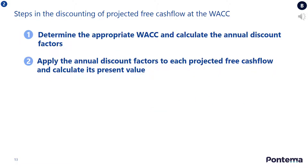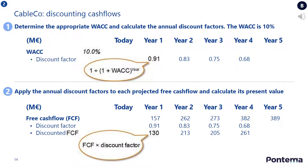The second step in performing a discounted cash flow valuation is to discount the projected free cash flows at the weighted average cost of capital. This step has two key tasks, as shown in the slide: firstly, to determine the appropriate weighted average cost of capital and calculate the annual discount factors; and secondly, to apply the annual discount factors to each projected free cash flow and calculate its present value. The weighted average cost of capital was given as 10%, which allows you to calculate the appropriate annual discount factor. Applying these discount factors to each projected free cash flow gives us the present value of each cash flow.